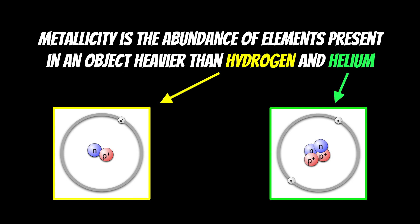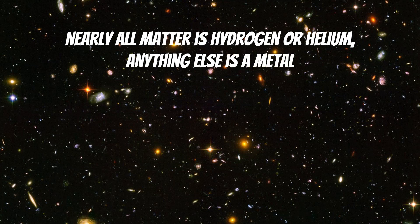In astrophysics, when we talk about metals and metallicity, it means any element present in the object that is heavier than hydrogen or helium. So it's not like a normal metal you might be more familiar with. A metal is just something heavier than hydrogen or helium, which accounts for most other elements — although hydrogen and helium are actually the most abundant elements in the universe. So nearly all matter in the universe is hydrogen or helium, and anything else we would consider to be a metal.